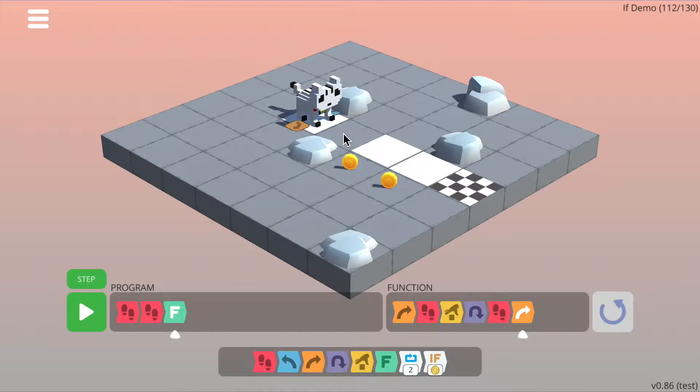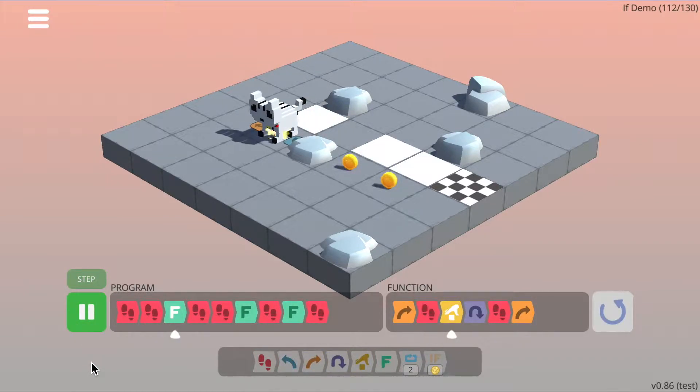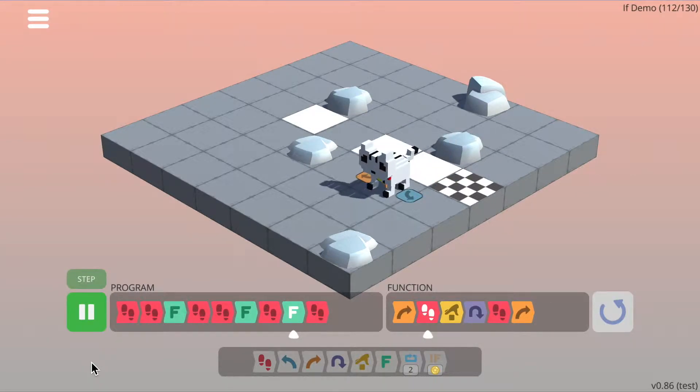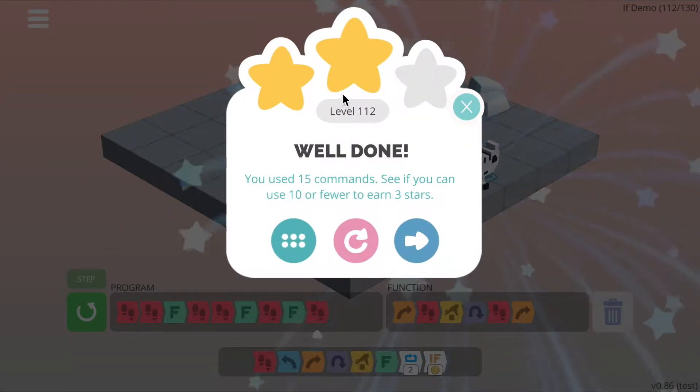Now, to do the remainder, I just need to walk forward twice again and call the function, walk forward, call the function and then finally walk forward. So I'm going to do that quickly and that should be it. So if I press run, that should collect all the coins and get to the finish line. Okay, great. So that got us to the finishing line. Only got us two stars though because we used 15 commands rather than the 10.